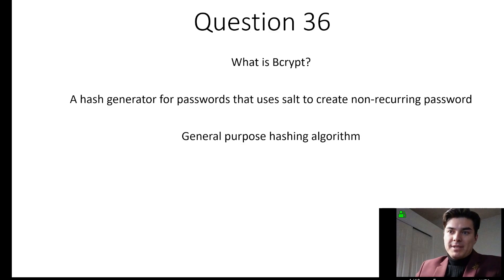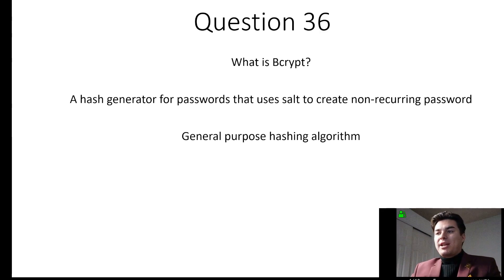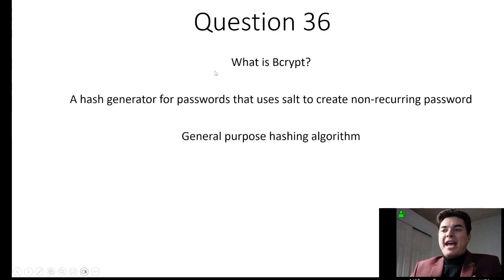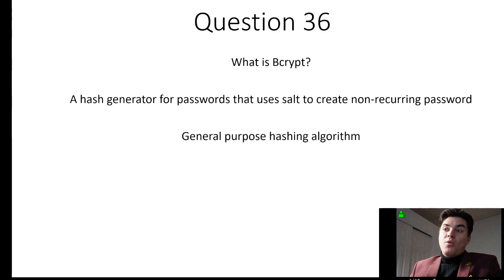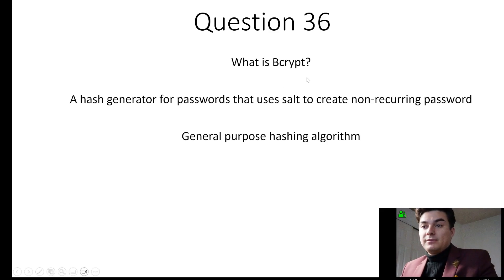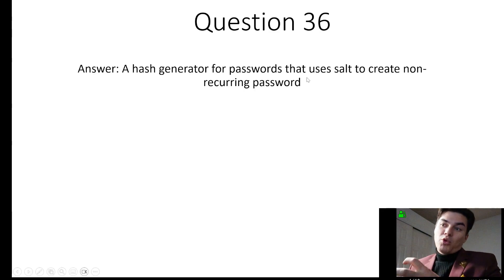What is bcrypt? bcrypt is a hash generator for passwords that uses salt to create non-reoccurring passwords. SHA and MD5 are general-purpose hashing algorithms, while bcrypt is specifically used with passwords. When you log into a website like amazon.com and type in your password, it adds additional salt — additional characters — to your password and then runs it through a hashing algorithm.